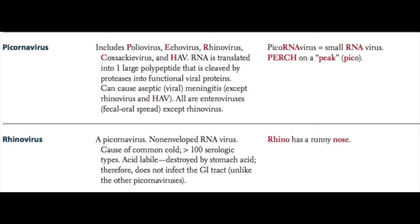The way to remember which viruses are in the picornavirus family is to remember 'Perch on a Peak.' PERCH stands for: Polio, Echo, Rhino, Coxsackie, Hep A — on a peak, picorna viruses.